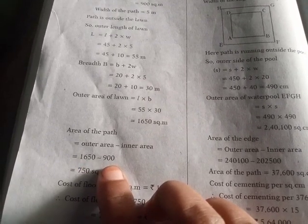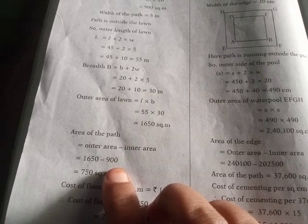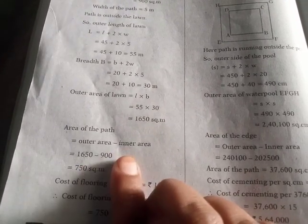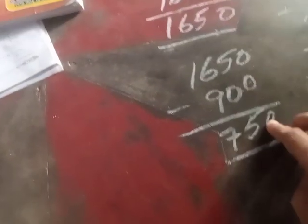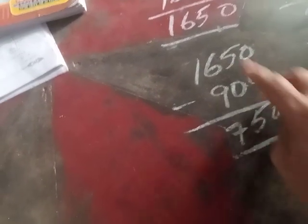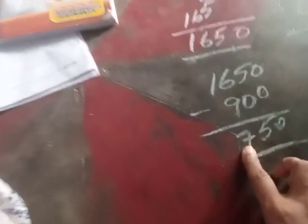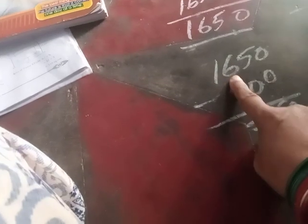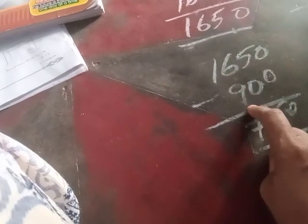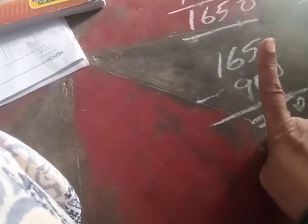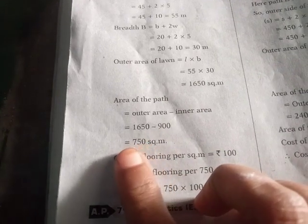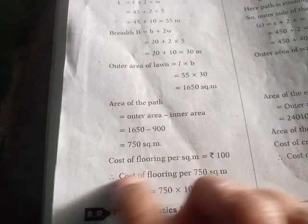Area of the path is equal to outer area minus inner area, which is equal to 1650 minus 900, which is equal to 750 square meters.